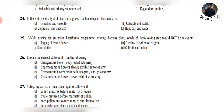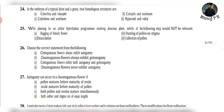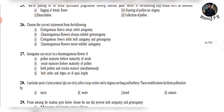Question 24: In the embryo of a typical dicot grass, the true homologous structure to cotyledons is option C. Question 25: While planning for an artificial hybridization program involving dioecious plants, emasculation is not relevant because dioecious plants already have separate male and female flowers.